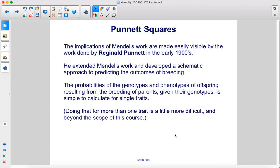The implications of Mendel's work are made easily visible by the work done by Reginald Punnett in the early 1900s. He extended Mendel's work and developed a schematic approach to predicting the outcomes of breeding.